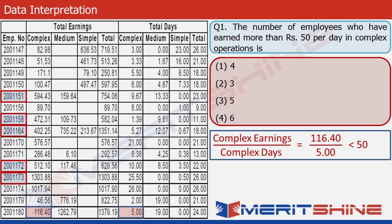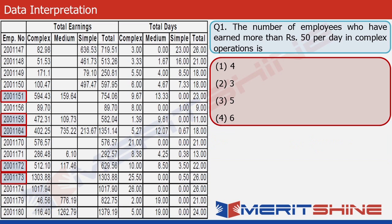The ones highlighted in red are the only ones that have qualified. Counting them quickly: 1, 2, 3, 4, 5. So the answer is option 3. Remember that in a question like this, you have to count very quickly directly from the table — you don't need to write all these values separately. We did this to help you understand the procedure.